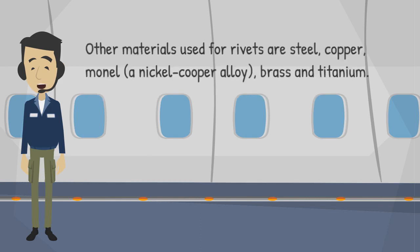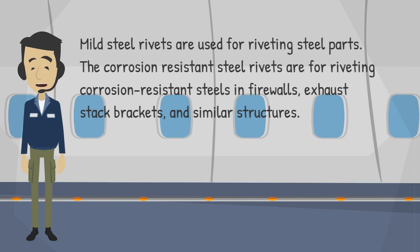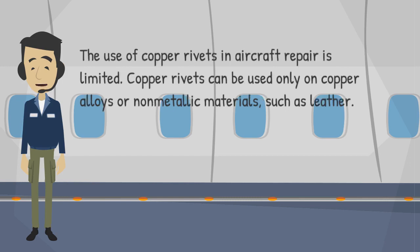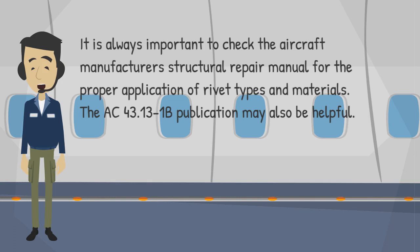Other materials used for rivets include steel, copper, monel (a nickel-copper alloy), brass, and titanium. Mild steel rivets are used for riveting steel parts. Corrosion-resistant steel rivets are for riveting corrosion-resistant steels in firewalls, exhaust stack brackets, and similar structures. Monel rivets are used for riveting nickel-steel alloys and can substitute for corrosion-resistant steel in some cases. Copper rivets are limited in aircraft repair and can only be used on copper alloys or non-metallic materials such as leather. Always check the aircraft manufacturer's structural repair manual and the AC-43.13-1B publication for proper rivet application.